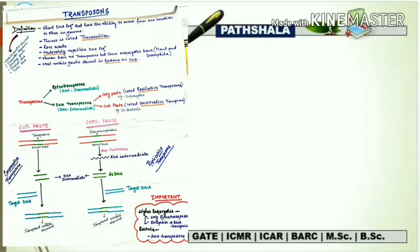If the copy-paste mechanism is followed, the transposon is called a replicative transposon — because a copy remains at the original site while another is inserted elsewhere, effectively replicating the element. If the cut-paste mechanism is followed, it is called a conservative transposon — because the element is cut from one place and pasted elsewhere, conserving the original copy count.